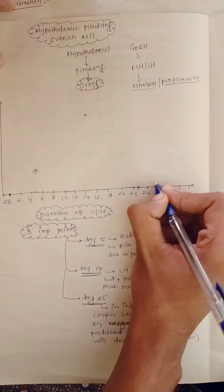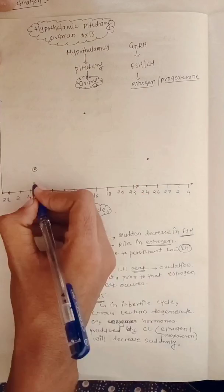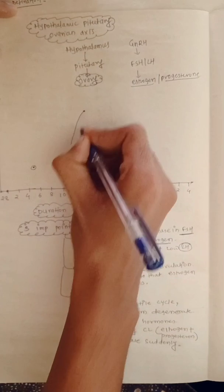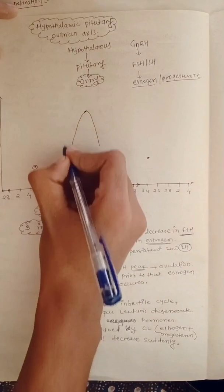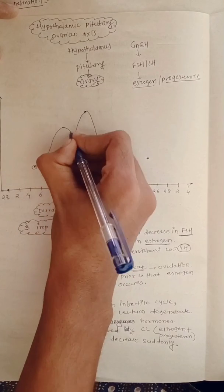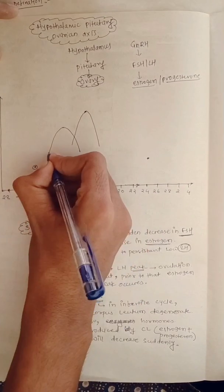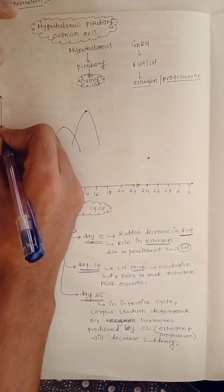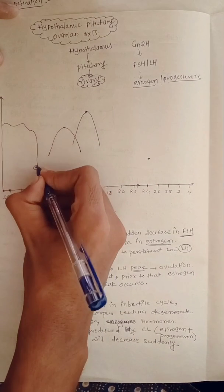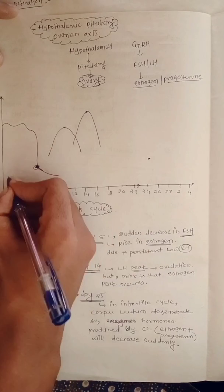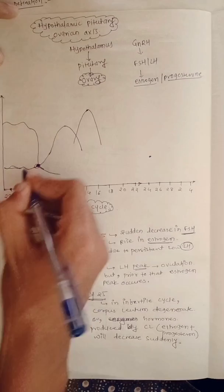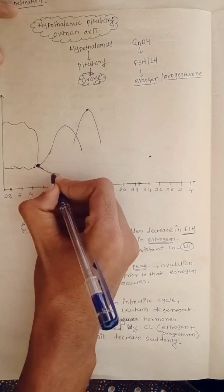Now we plot these features on the graph — day five, day fourteen, and day twenty-five. From day one to day five, there is a rise of FSH; on day five, FSH will suddenly reduce. We then connect the graph accordingly.